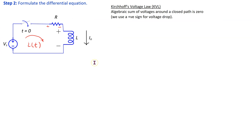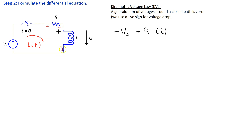The next step is to formulate the circuit equation by applying Kirchhoff's voltage law following passive sign convention. Following the direction of the assumed current, going from minus to plus is a voltage rise, so we write minus Vs. The voltage drop across the resistor is R times I(T) by Ohm's law, and the voltage drop across the inductor is L d/dt of I(T). This sum equals 0.